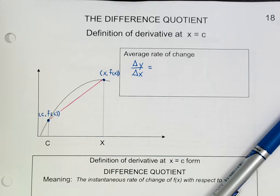This is topic 18, the difference quotient — the definition of a derivative at x is equal to c.